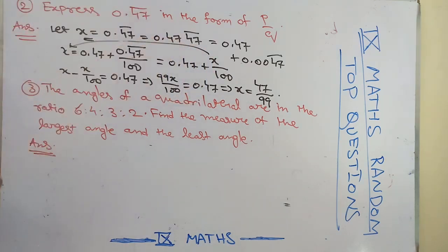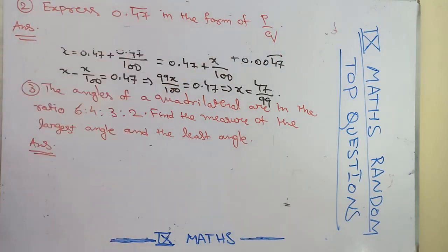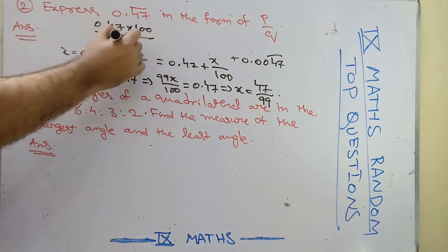A simple technique is that I will show you here. It is like 0.47 bar is given. You can write 0.47 into 100 divided by 99.